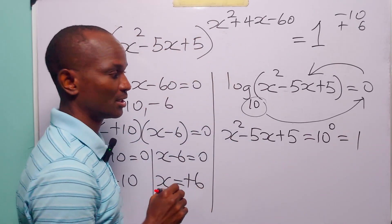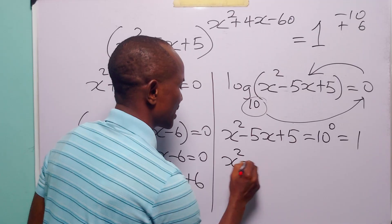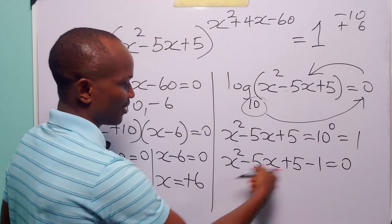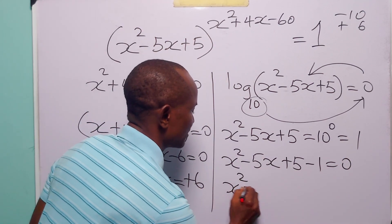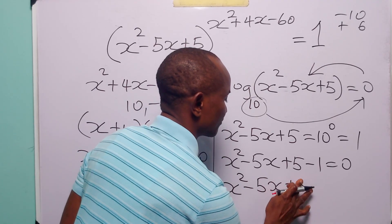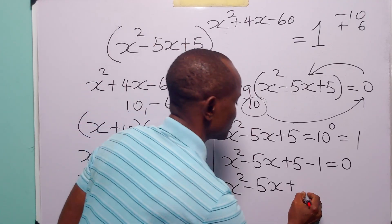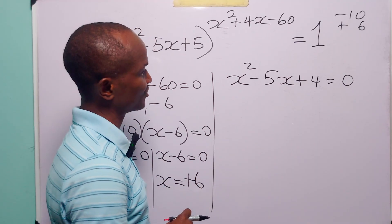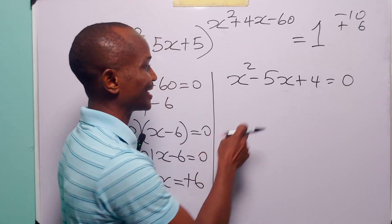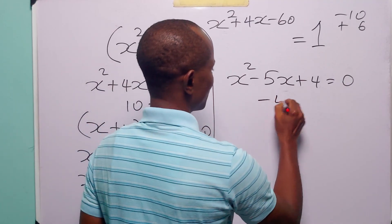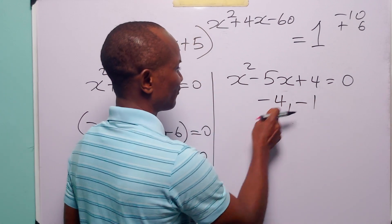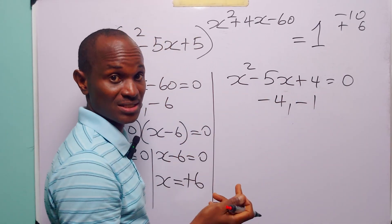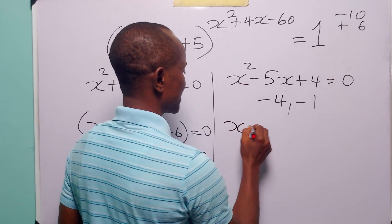Since 10⁰ = 1, we have x² - 5x + 5 = 1. Rearranging gives x² - 5x + 4 = 0. We solve by factorization — we need factors of +4 that add up to -5. Those are -4 and -1, because (-4) × (-1) = +4 and (-4) + (-1) = -5.